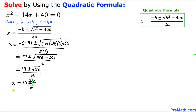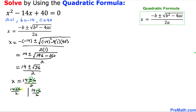One is going to be 14 plus 6 divided by 2, and the other one is going to be 14 minus 6 divided by 2 — one with a positive sign and one with a negative sign. So over here, 14 plus 6 is going to become 20 divided by 2, which means x equals 10 is one of our solutions.